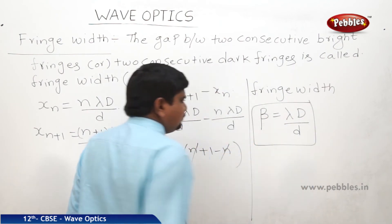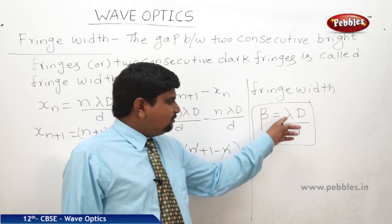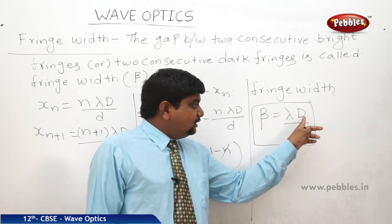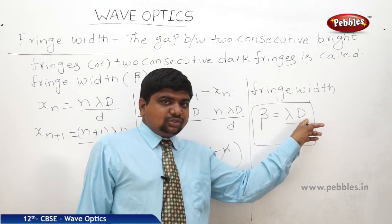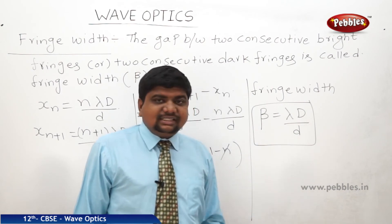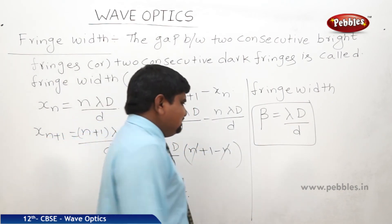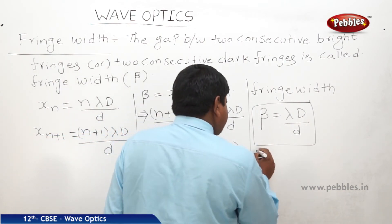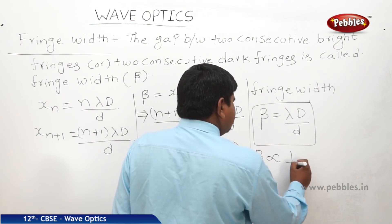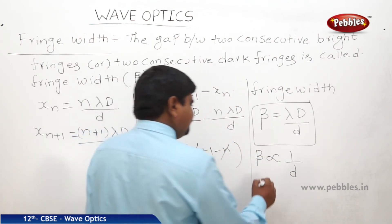Fringe width beta is directly proportional to the wavelength of the light source used and the distance between the source and screen, and inversely proportional to the distance between the slits.